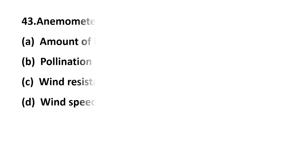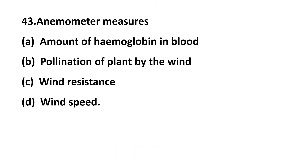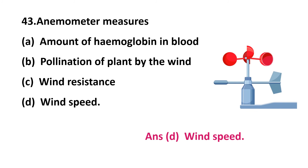Question 43: an anemometer measures — option A: amount of hemoglobin in blood, option B: pollination of plant by the wind, option C: wind resistance, option D: wind speed? The correct answer is option D: wind speed. Wind speed is measured by an anemometer.